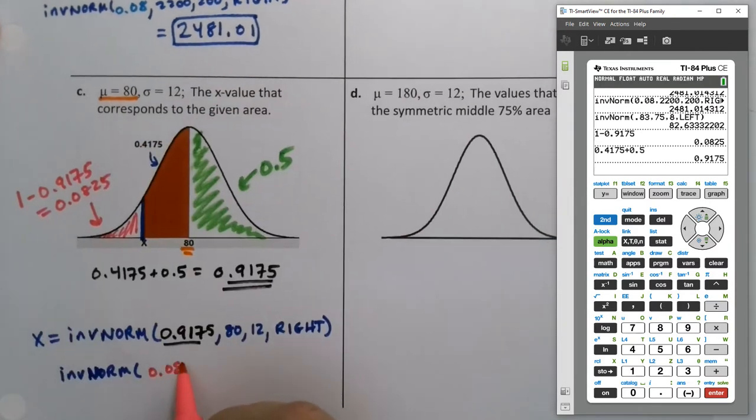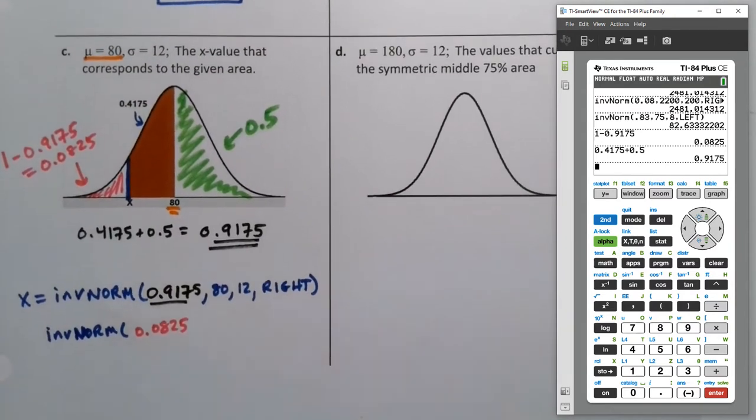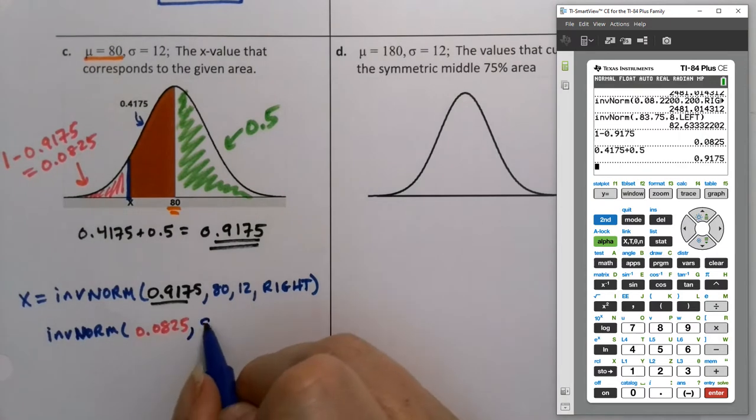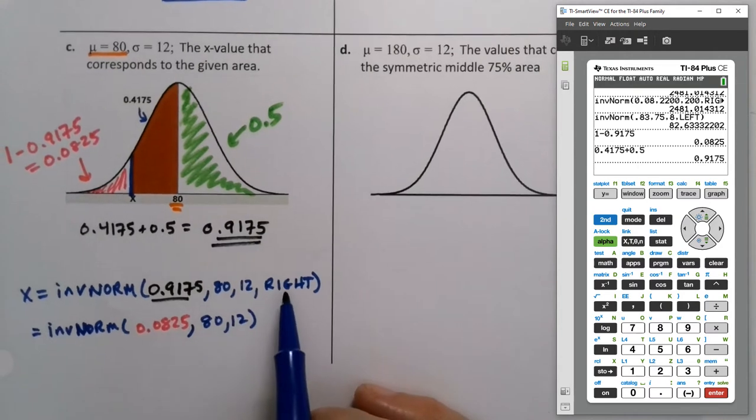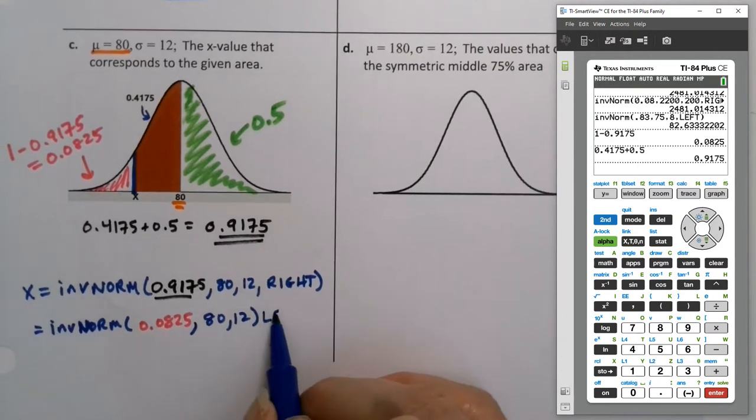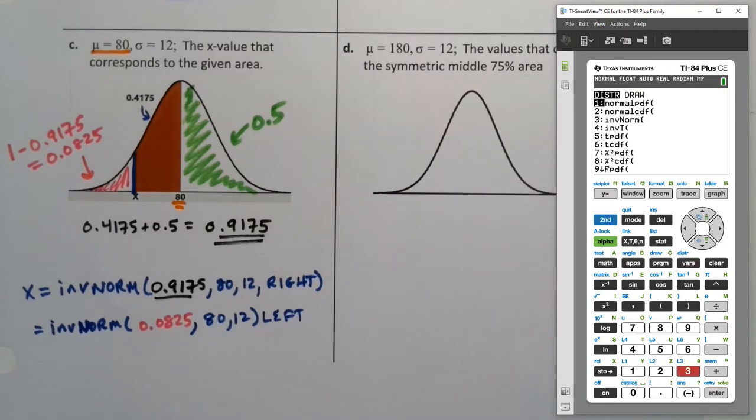So you can use that if you have an older calculator, and you'll just have to do 80 and 12, because it has to be the left tail area in an older calculator. In a newer calculator, you can do it this way. Right? So this is a left one that you're doing right here. And of course, in StatCrunch, you don't have to worry about either one of them.